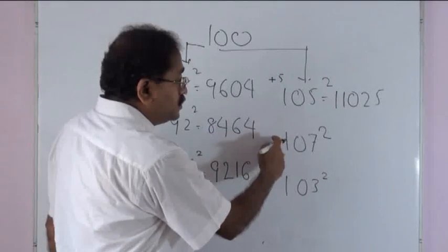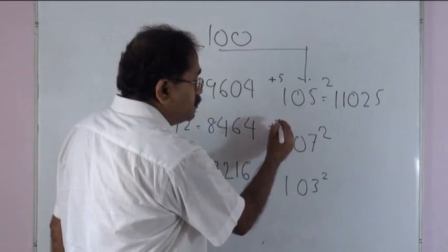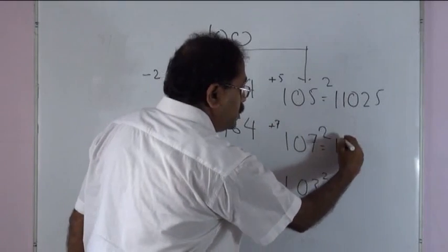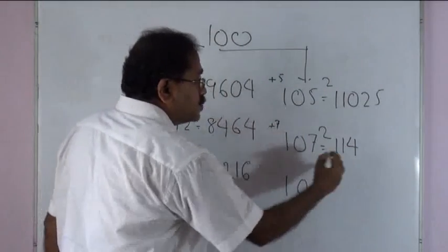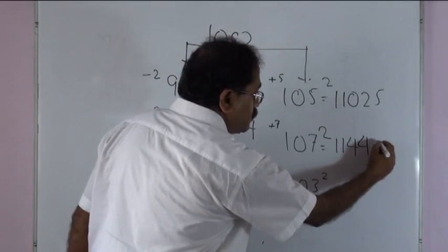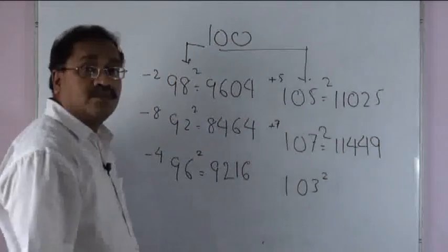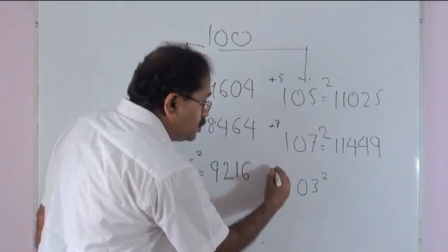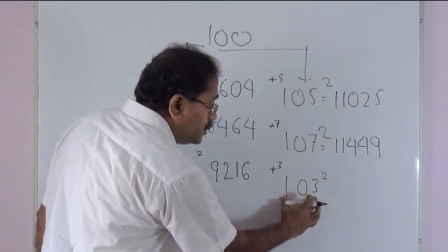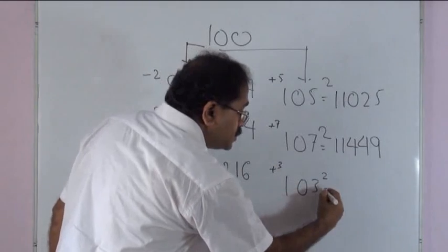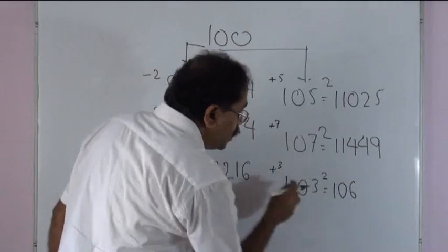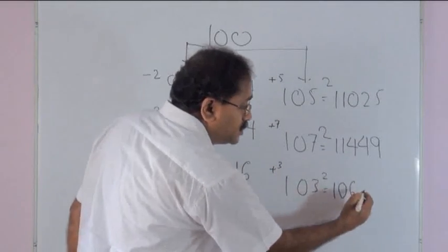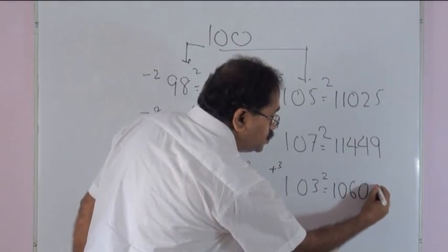107 is 7 more than 100, so 107 plus 7, which is 114, followed by 7 squared, which is 49. So 107 squared equals 11449. For 103, this is 3 more than 100, therefore 103 plus 3, which is 106, followed by 3 squared. As 9 is a single digit number, we place 09. So 103 squared equals 10609.